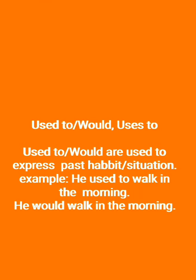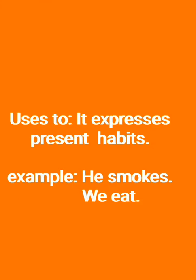Used to और would are used to express past habit or situation — यह past की habit या situation को दिखाने के लिए use करते हैं। Example: 'He used to walk in the morning.' इसके लिए used to और would दोनों का use किया जा सकता है past की habit दिखाने के लिए।